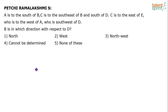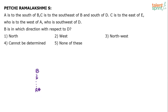A is to the south of B. Let's say B is here and A is in this direction — to the south. The important point is all we know is that A is in the southern direction of B, but how far south is not known to us — one kilometer, 10 kilometers, or any distance. The distances are not given in any of these statements.